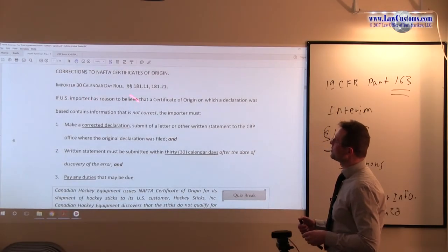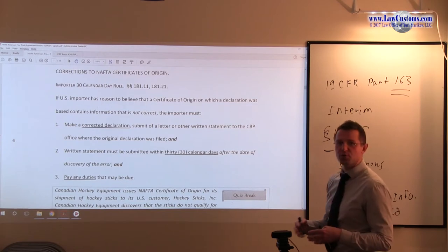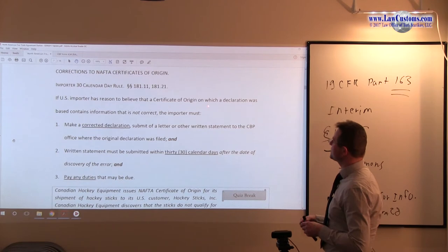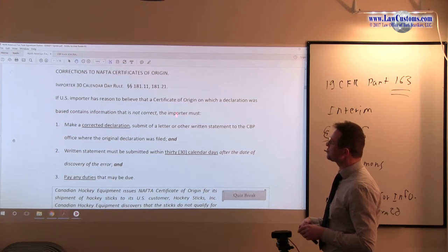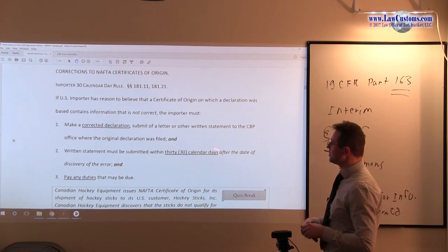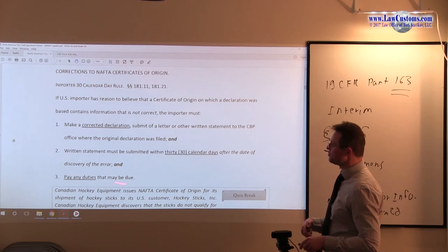If a U.S. importer has a reason to believe that a certificate of origin on which a declaration was based contains information that is not correct, the importer must make a corrected declaration, submit a letter or other written statement to the office where the original declaration was filed. You see that 30 calendar day rule again, and pay any duties that may be due.